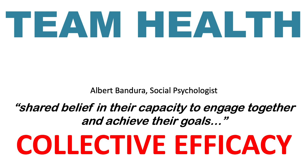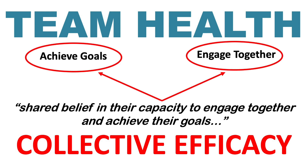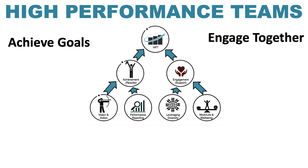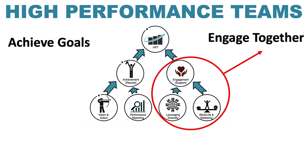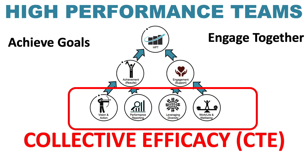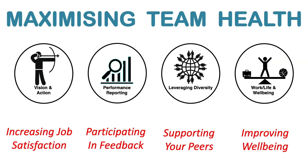Collective efficacy is the shared belief in a team's capacity to engage together and achieve their goals, and there's two really important parts of that: achieving goals and engaging together. High-performance teams achieve their goals by aligning vision and action and performance reporting, and they engage well when they leverage diversity and understand work-life and wellbeing. These four factors are the secret to building collective efficacy and maximising team health — it's about understanding, measuring, and managing those four important parts of our high-performance teams framework.